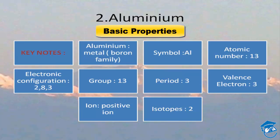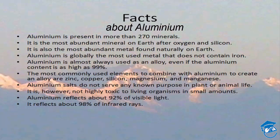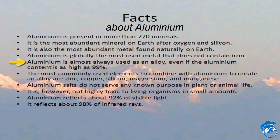Aluminium has two stable isotopes. Moving to the universal facts: aluminium is present in more than 270 minerals and is the most abundant mineral on Earth after oxygen and silicon. It is also the most abundant metal found naturally on Earth and is globally the most used metal that does not contain iron. It is almost always used as an alloy, and even if the aluminium content is as high as 99%, the most commonly used elements to combine with aluminium to create an alloy are zinc, copper, silicon, magnesium, and manganese.